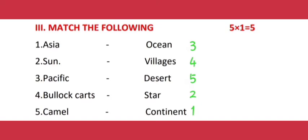Number four: Bulla Cards — Villages. Number five: Camel — Desert.